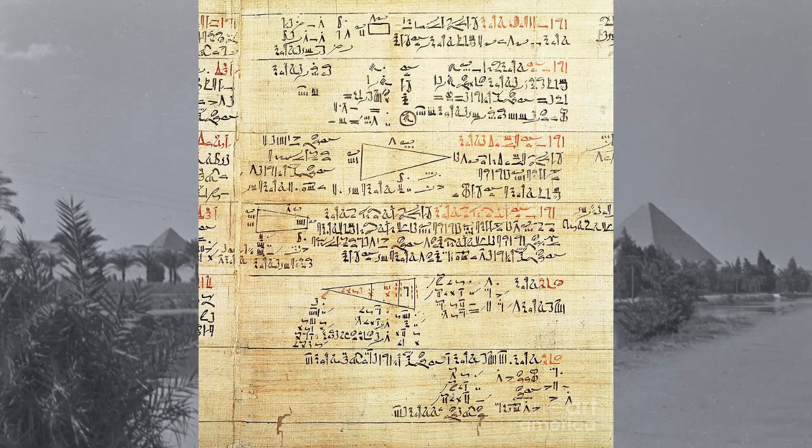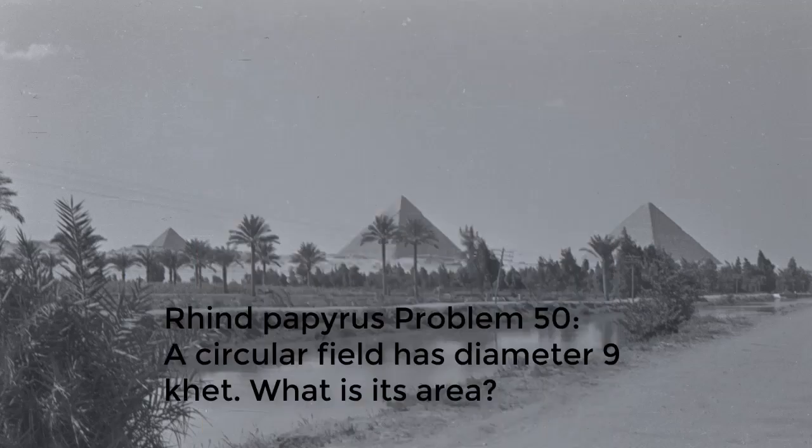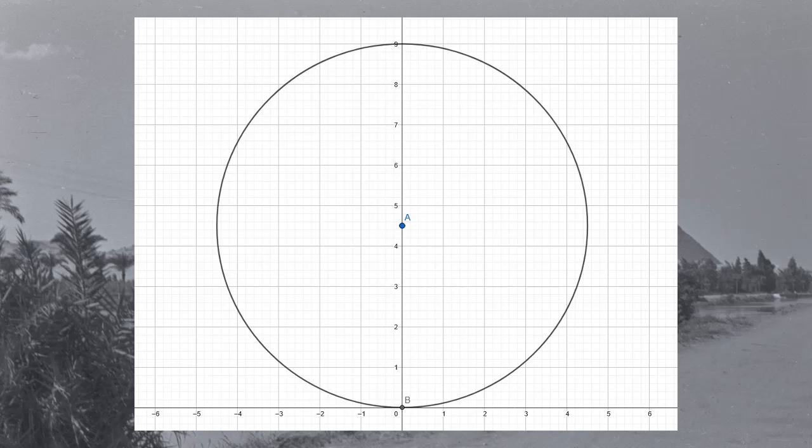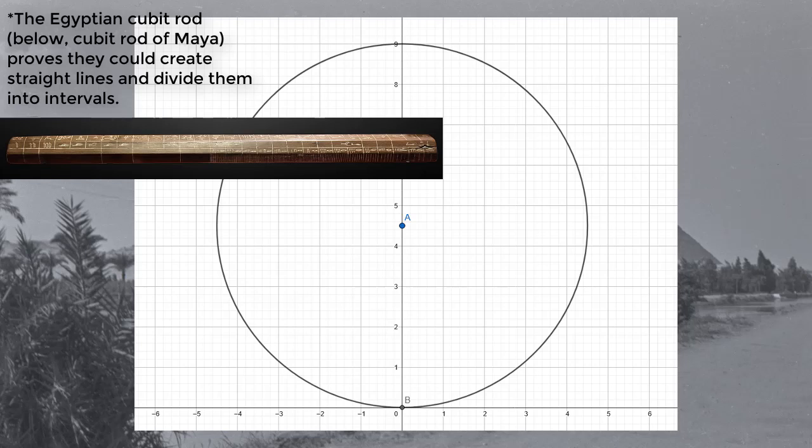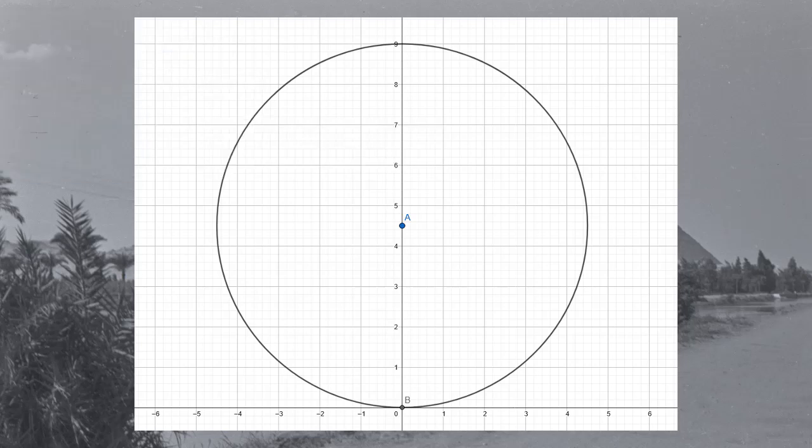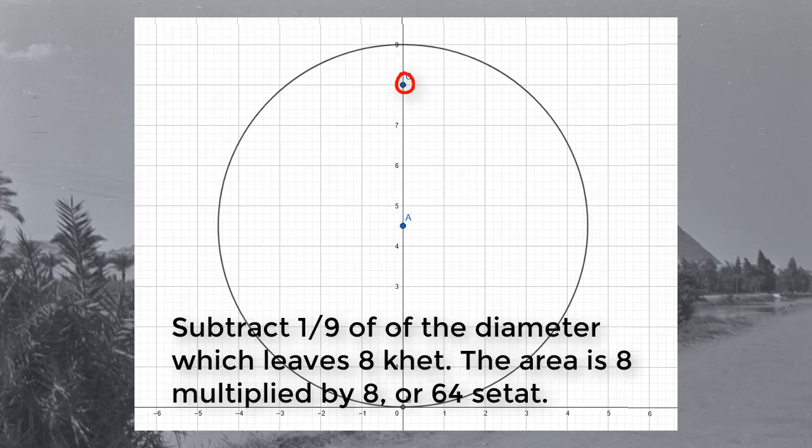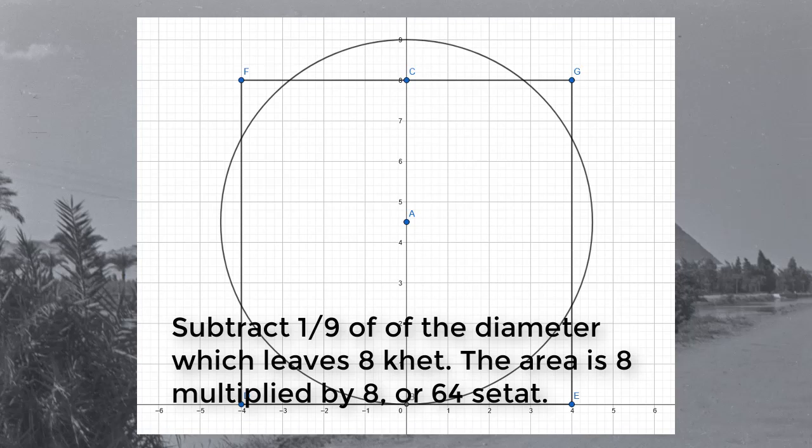The question reads: A circular field has diameter 9. What is its area? So we are asked to find the area of a circle given only its diameter, a question that requires pi. This question is practically begging us to visualize this process on a number line, which would have been very easy and helpful for the Egyptians to do. The written solution is: subtract 1 ninth of the diameter, which leaves eighth. The area, 8 is multiplied by 8, or 64.